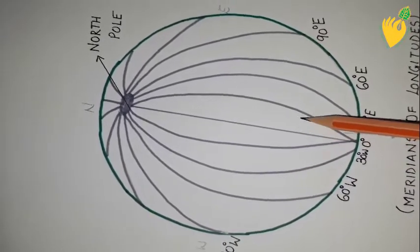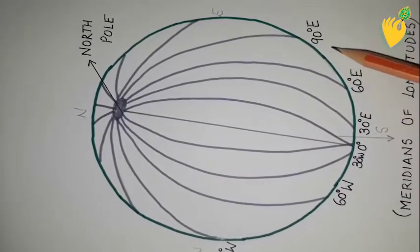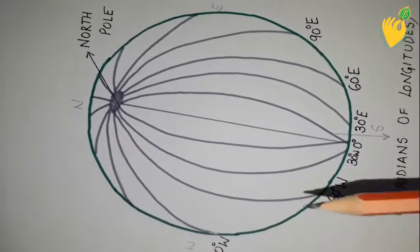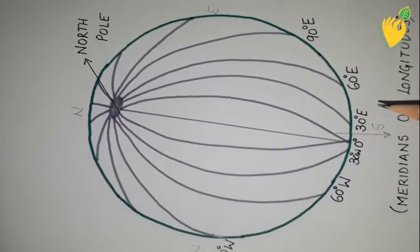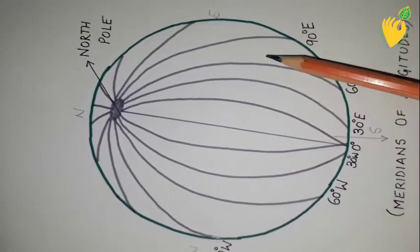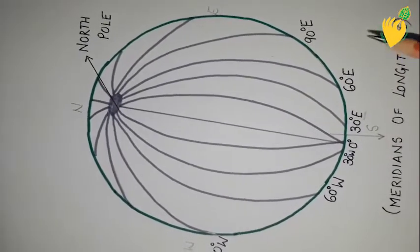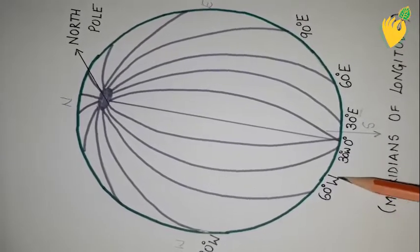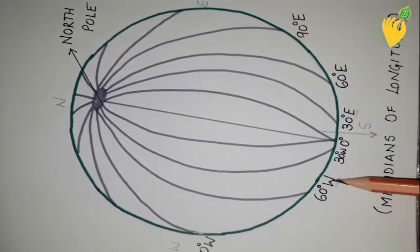All the lines are placed at a regular interval of one degree each. In the diagram, a distance of 30 degrees is used between lines just for representation. Lines located in the eastern hemisphere are signified by the letter E, and all lines in the western hemisphere are signified by the letter W.